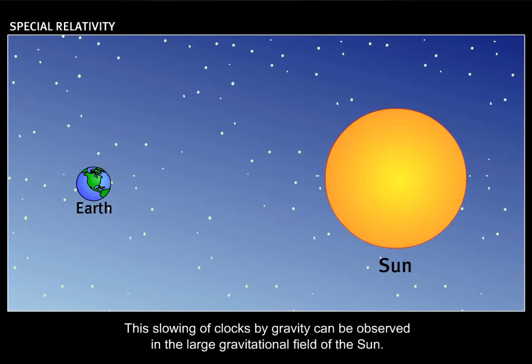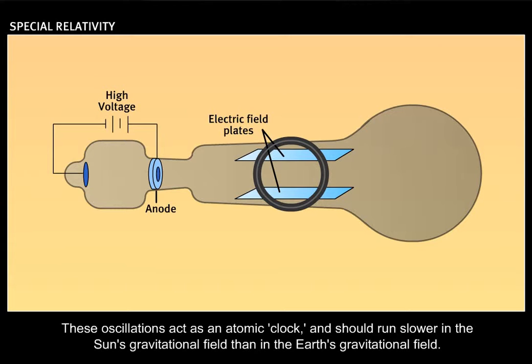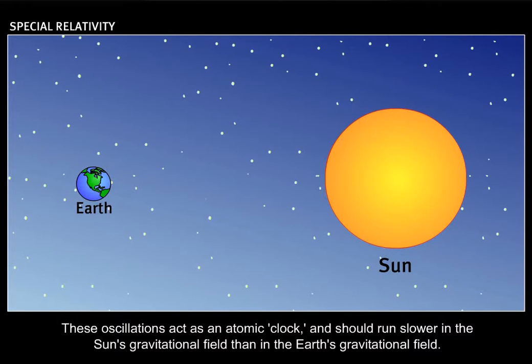This slowing of clocks by gravity can be observed in the large gravitational field of the sun. Previously, we learned that a material emits light that is characteristic of the oscillation of its electrons. These oscillations act as an atomic clock and should run slower in the sun's gravitational field than in the Earth's gravitational field.